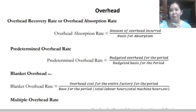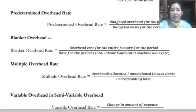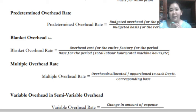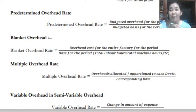For the blanket overhead rate, the formula is: overhead cost for the entire factory divided by the base for the period. We can use labor hours, machine hours, or other bases. The blanket overhead rate applies generally to the entire factory — for example, if the entity is producing more than one product and they share the factory overhead, this is what we use to determine how much of the overhead will be applied to each product.